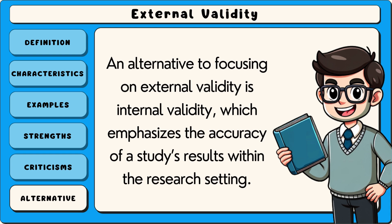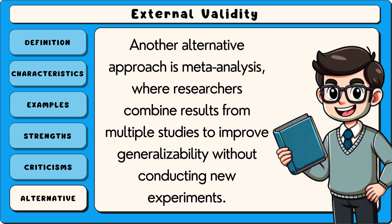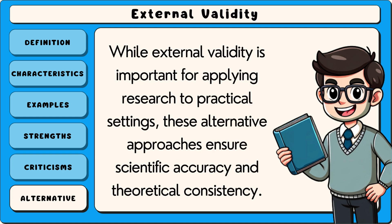An alternative to focusing on external validity is internal validity, which emphasises the accuracy of a study's results within the research setting, ensuring that changes in the dependent variable are directly caused by the independent variable, minimising outside influences. Another alternative approach is meta-analysis, where researchers combine results from multiple studies to improve generalisability without conducting new experiments. Some researchers also prioritise theoretical validity, ensuring that findings align with established theories rather than focusing solely on real-world application. While external validity is important for applying research to practical settings, these alternative approaches ensure scientific accuracy and theoretical consistency.